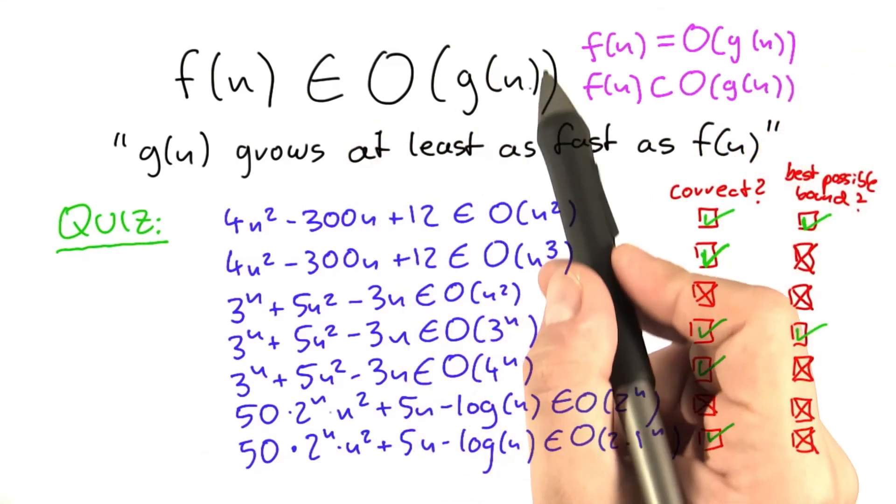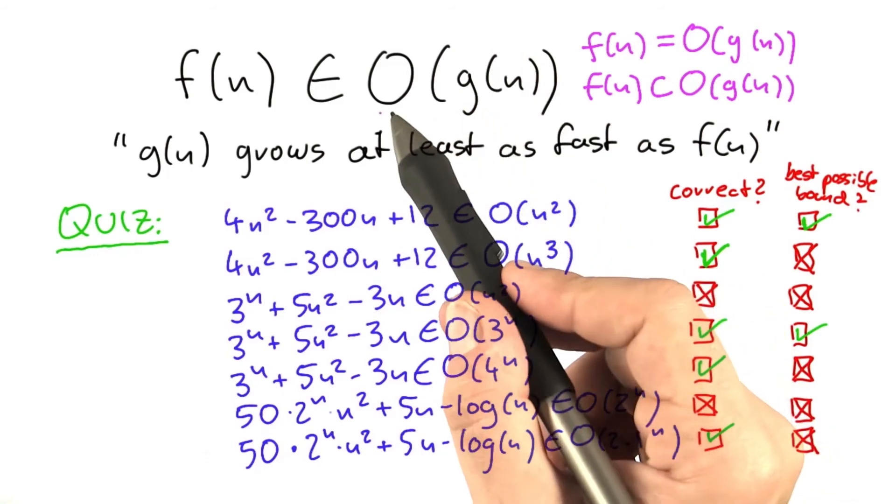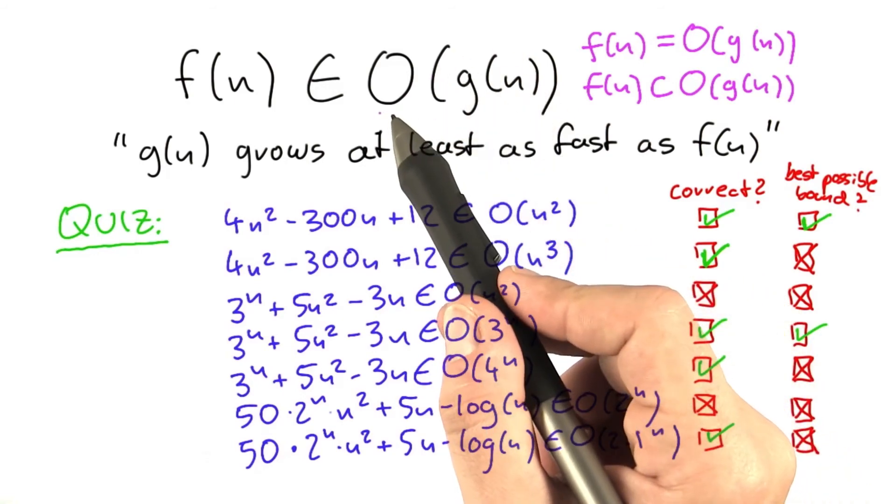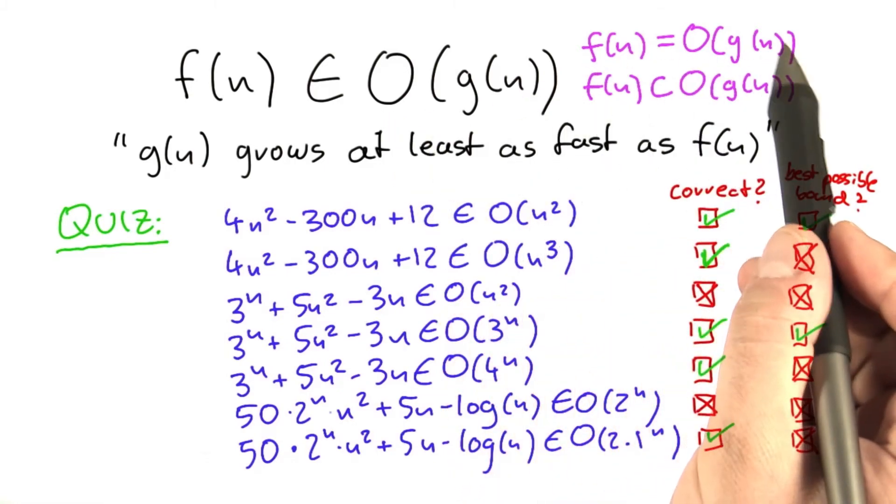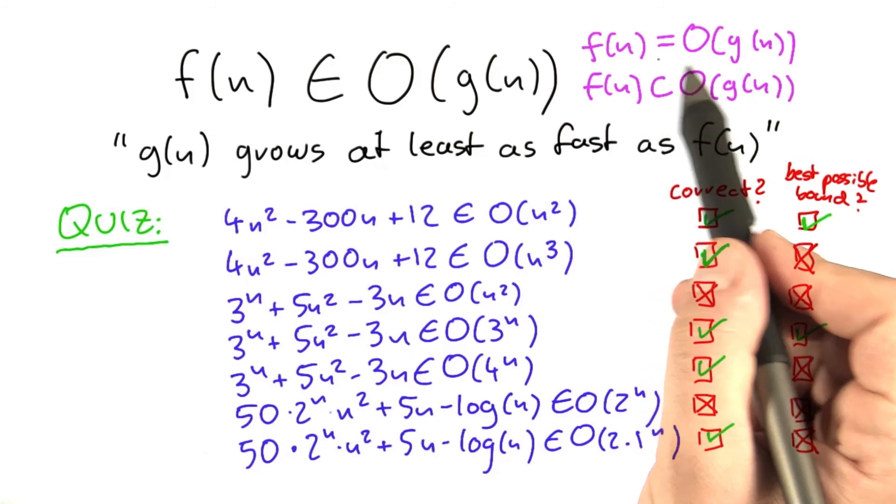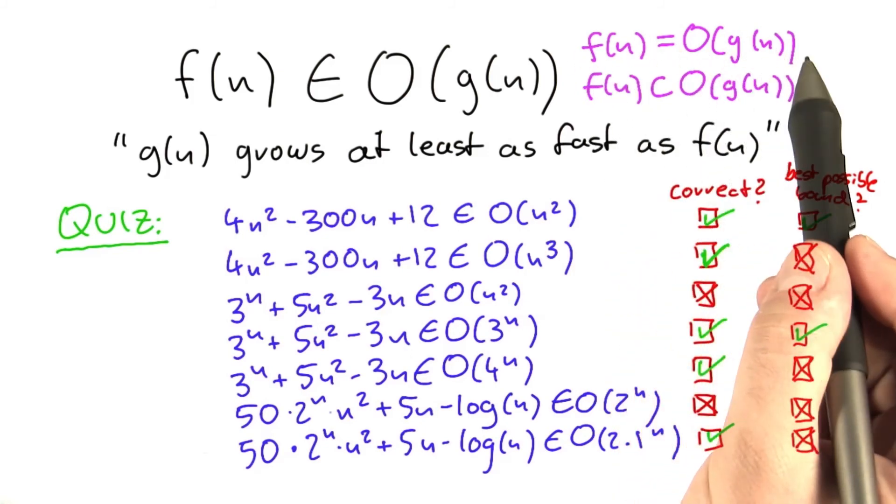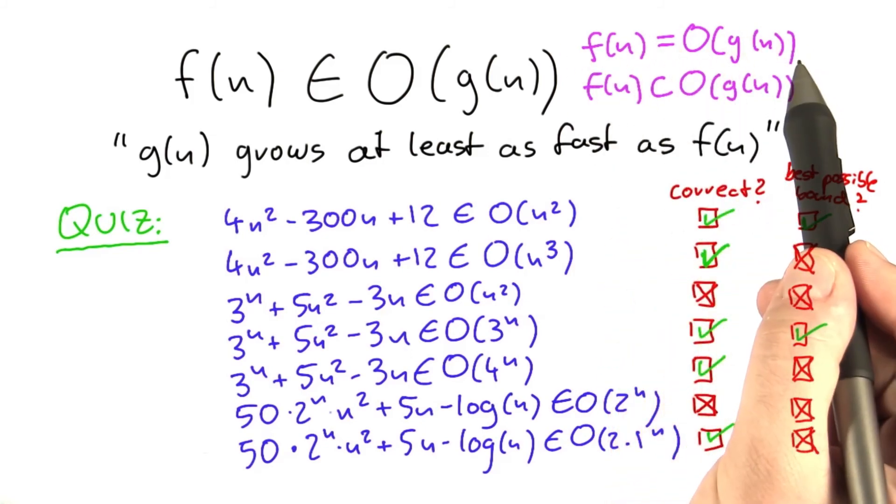This here is probably the most correct way to state it because O of g of n is actually a set of functions if you were to consider it mathematically, but this one up here equals O of g of n is also a very common one that you can also find in many scientific papers and even teaching books.